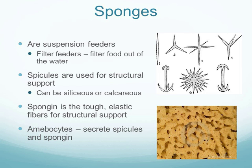Sponges are suspension feeders, filtering food from water using cilia on their cells. Spicules created by amoebocytes provide structural support and protection, as few organisms eat sponges but some do. Spicules can be siliceous or calcareous. Another structural material is spongin — a tough, elastic, fibrous material also secreted by amoebocytes.